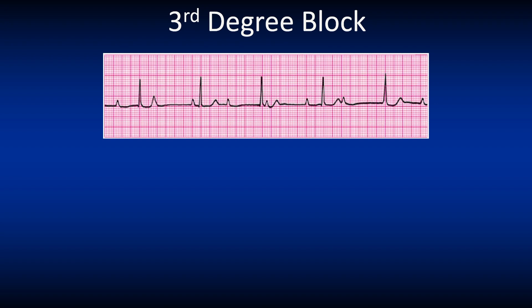Here is another example of a third degree block, but this is not typically what we associate with a third degree block, as the QRS complex is narrow. The QRS will be narrow when the block is above the His junction. Don't get confused when the QRS is narrow, as this ECG still meets all the criteria to be classified as a third degree block.